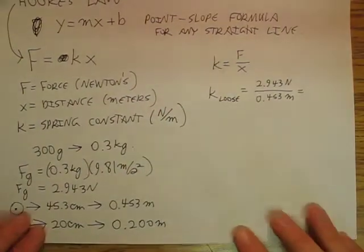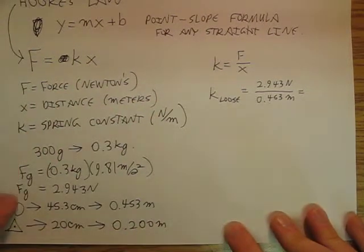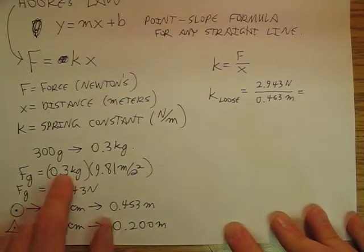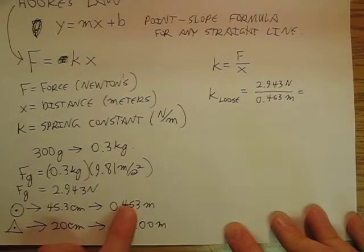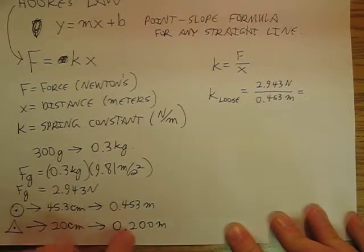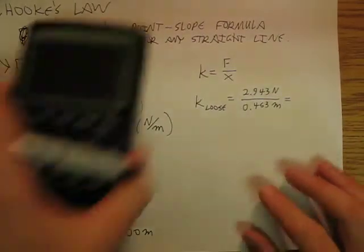We had figured out, we were talking about Hooke's Law, and we had figured out F equals KX. We figured out the force due to gravity of a 300 gram object. And we converted our stretches into meters, and we are now in the process of calculating our spring constants for our two springs.